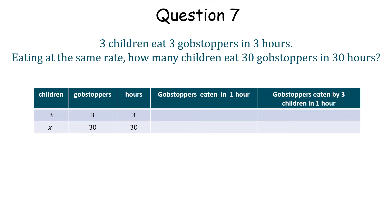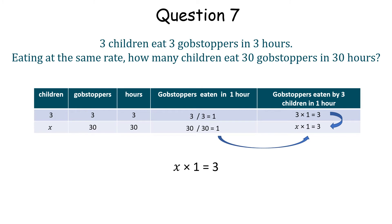One gobstopper is eaten per hour, so that's 3 gobstoppers eaten by 3 children in 1 hour. Now we have 30 gobstoppers eaten in 30 hours, again giving us 1 eaten in 1 hour. Therefore, making and solving a similar equation, it would take 3 children to eat 3 gobstoppers in 30 hours.